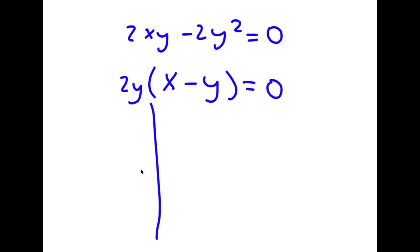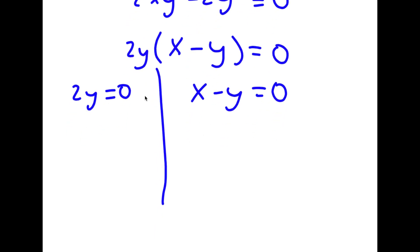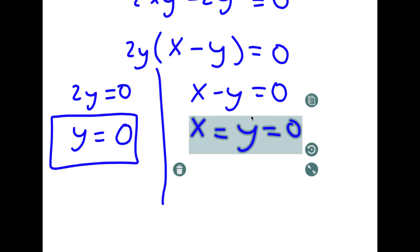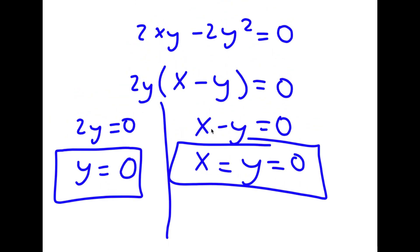This gives me two equations: 2y is equal to 0, and x minus y is equal to 0. For 2y equals 0, this means y is equal to 0. And if x minus y equals 0, this means x is equal to y. And since y equals 0, x is also equal to 0. So both variables are equal to 0.